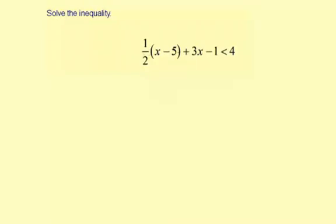First thing I'm going to do here is distribute this 1 half among the x and the negative 5. So it's going to be 1 half times x, or 1 half x. And then 1 half times negative 5 is negative 5 halves. I'm just going to leave it like that for the time being. And then plus 3x minus 1, less than 4.